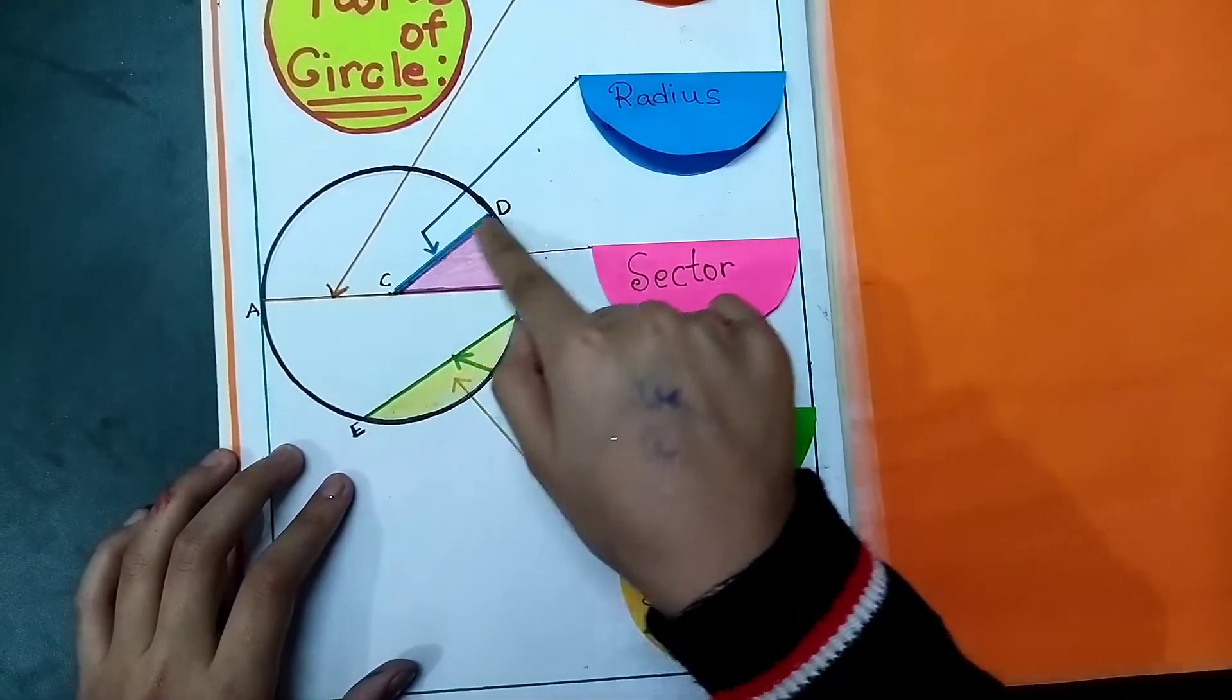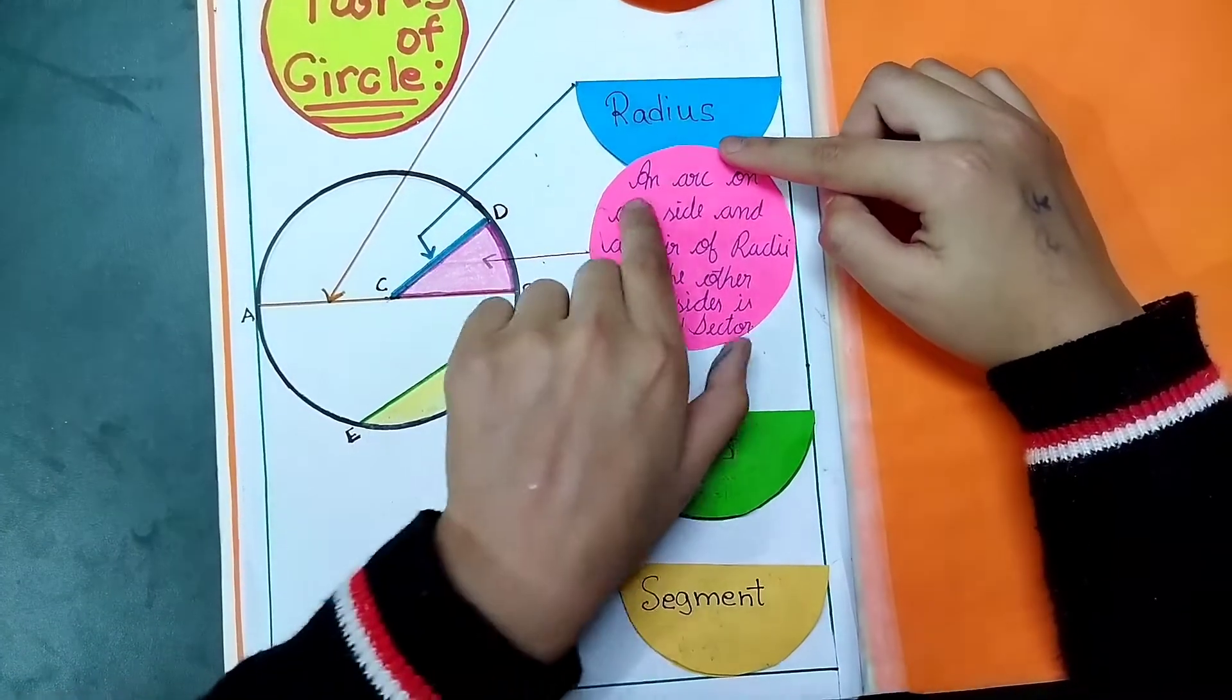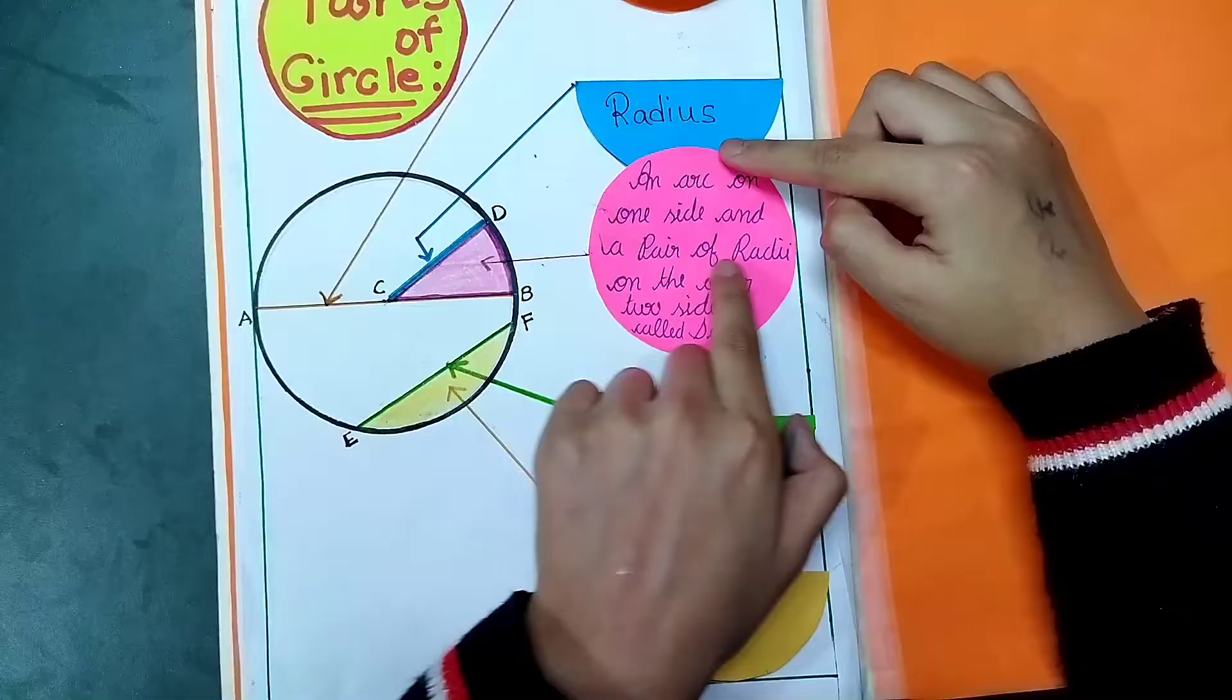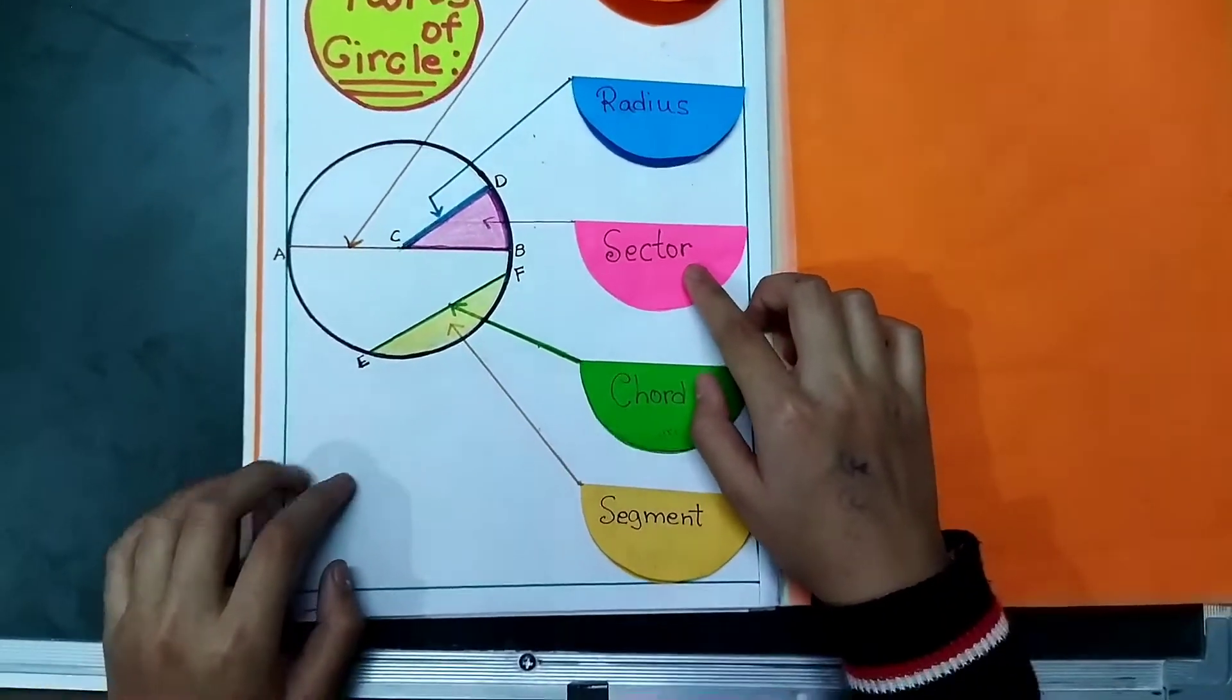Now sector. You can see this pink colored. This is sector. An arc on one side and a pair of radii on the other two sides is called a sector. This was the definition of sector.